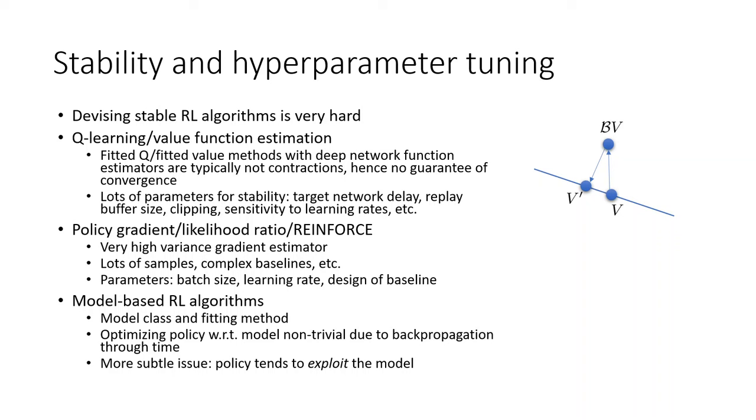Optimizing the policy with respect to the model is also non-trivial due to backpropagation through time issues, so we end up using model-free algorithms through the model, incurring all the challenges of model-free RL. There's also the subtle issue that the policy can exploit the model — discovering actions where the model erroneously predicts something good will happen. Model-based RL is a very adversarial process. All these approaches fundamentally share the same core issues: discovering optimal behaviors without ground-truth supervision, often by collecting your own data.